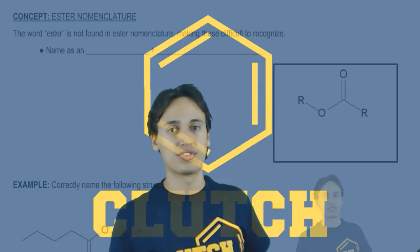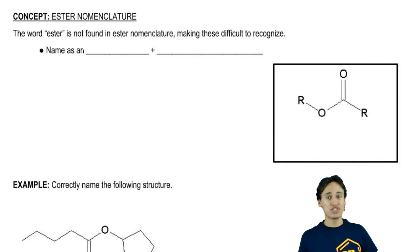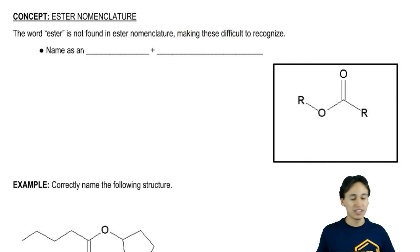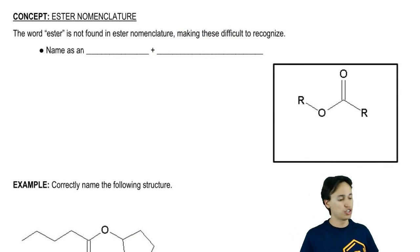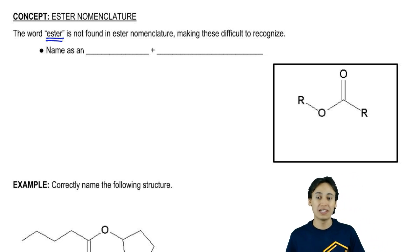On this page, we're going to learn how to name esters. Esters are actually one of the hardest functional groups to name, and that's because ester is one of the only functional groups where the name of the functional group is not found anywhere in the nomenclature.